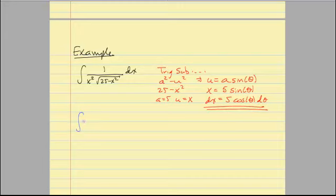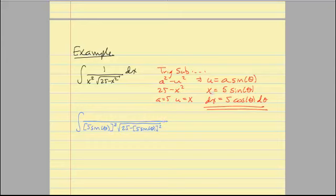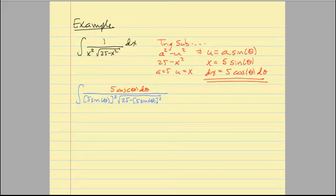Let's go ahead and substitute. x is 5 sine theta, and this says to square it, so this is going to look like 5 sine theta quantity squared. Underneath my radical I'm going to have 25 minus x squared, but again x is 5 sine theta quantity squared. One of the most important things to include here is dx, which was equal to 5 cosine theta d theta. And we just simplify, and hopefully we get to a spot that's a little bit easier to work with.